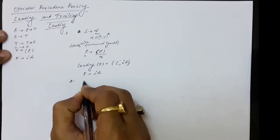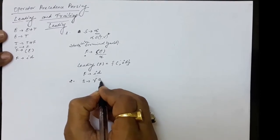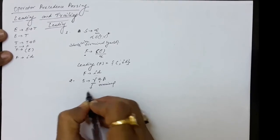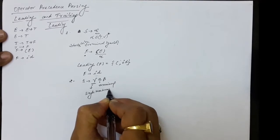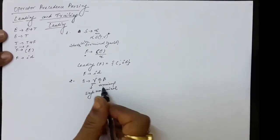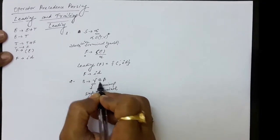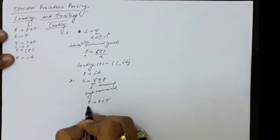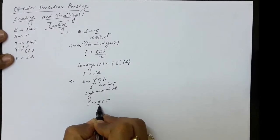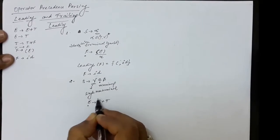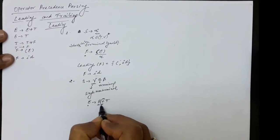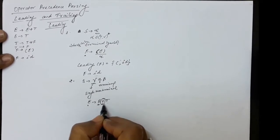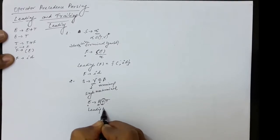Now suppose we have a production of kind S produces gamma A beta, where gamma is a single non-terminal and A is a terminal symbol. In that case, A will be in the LEADING of S. For example, in E produces E plus T, E on the right-hand side is a single non-terminal followed by terminal plus. So plus will be in the LEADING of E.